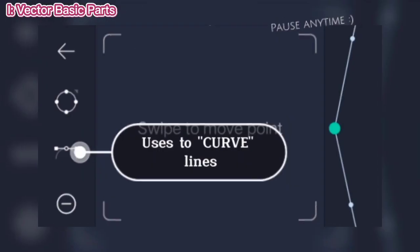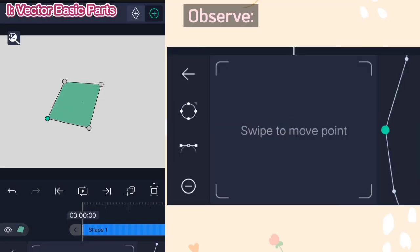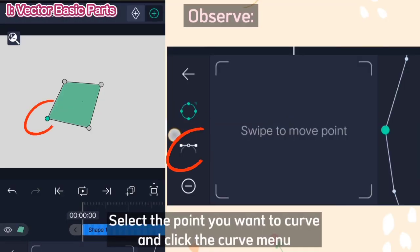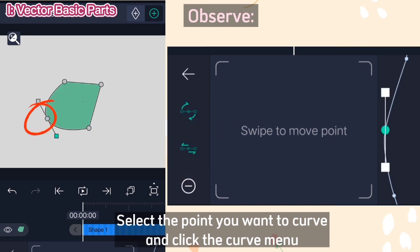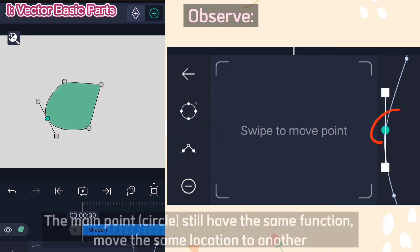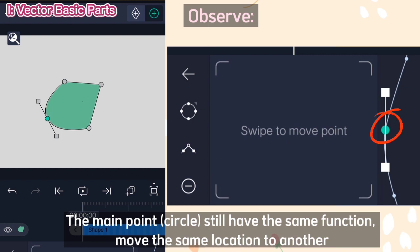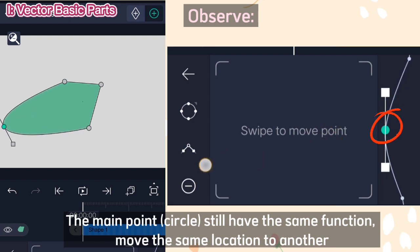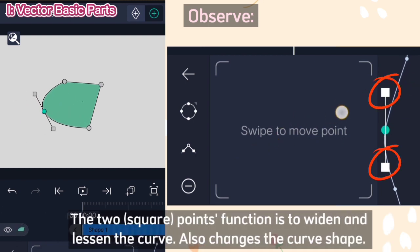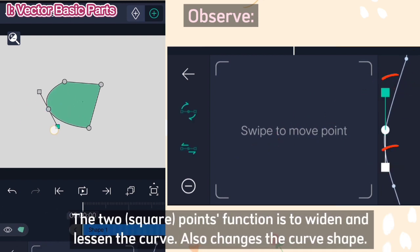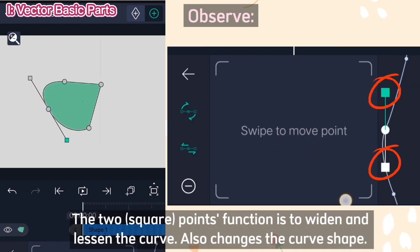Let's proceed. Use is to curve lines. Select the point you want to curve and click the Curve menu. The main points still have the same function — move from one location to another. The two square points function is to widen and lessen the curve, and also changes the curve shape.